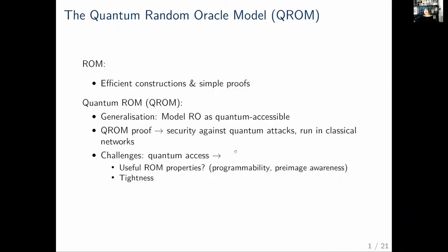To say a few words about the quantum random oracle model, I'd start with the random oracle model, which is very popular because it allows for simple proofs of efficient constructions. But it suffers from the drawback that it cannot take into account quantum attackers. This is why 10 years ago, the random oracle model was generalized by allowing the random oracle to be accessible via superposition queries, or in short, quantum accessible.